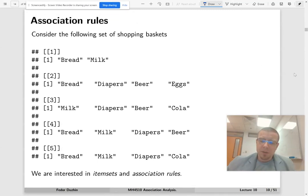Let us introduce some terminology. I'm going to give you a simple example of a set of shopping baskets. Here, customers buy some stuff, and some of these items appear together. We are going to be interested in so-called itemsets and association rules.